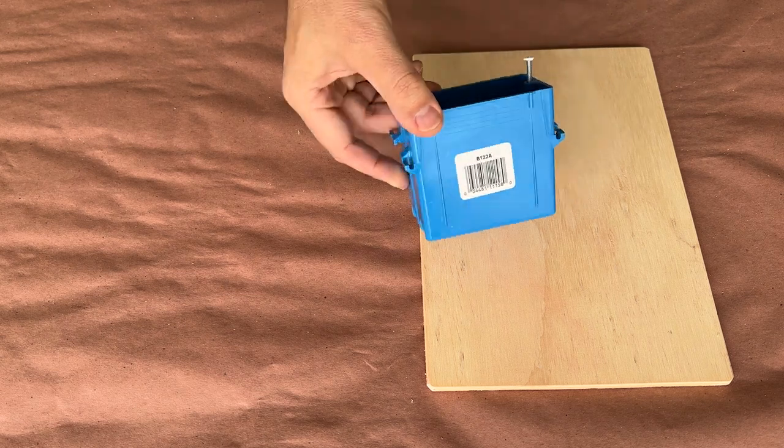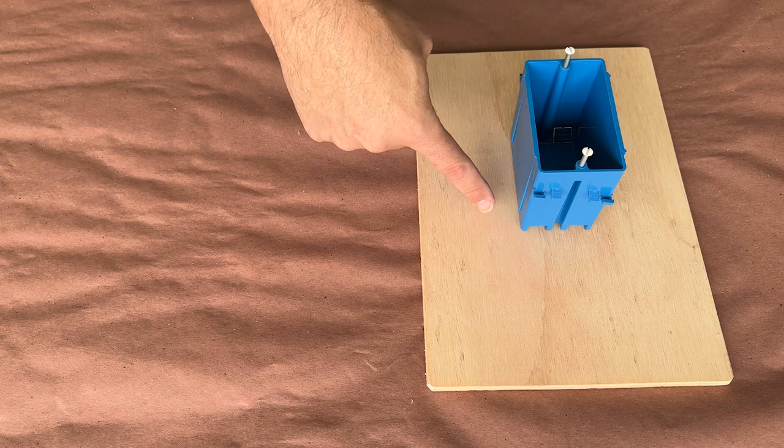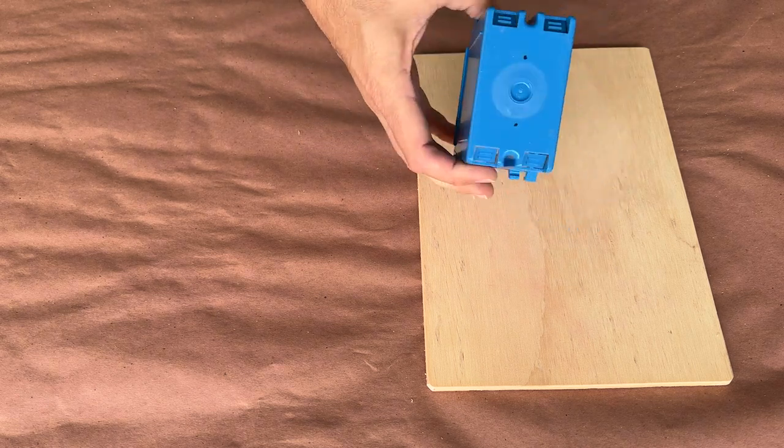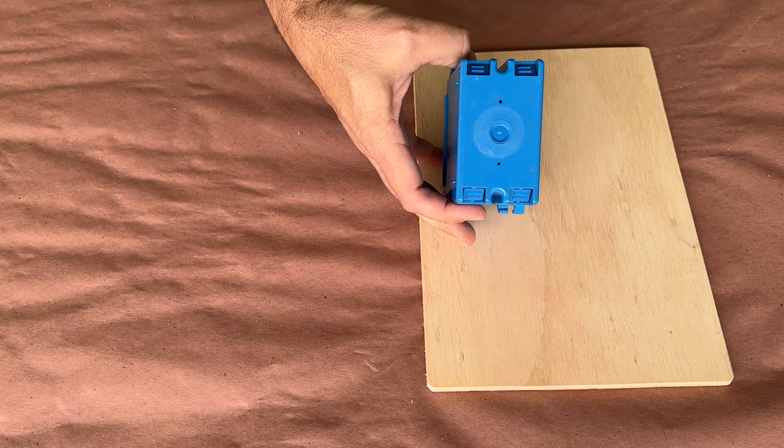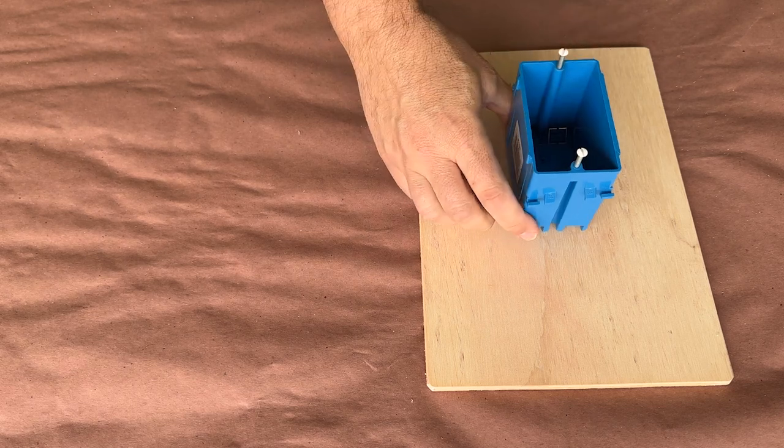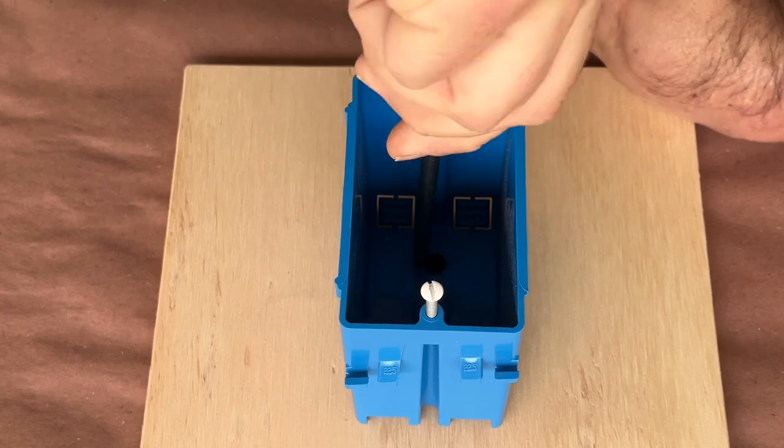I started the build with a small piece of plywood that would act as my base and a single plastic gang box, which is meant for housing electrical outlets and switches. I needed to mount the box to the base, so I marked out where my screws would go in the bottom of the box and pre-drilled the holes to make it easier to attach. Then it was just a matter of screwing it into position.